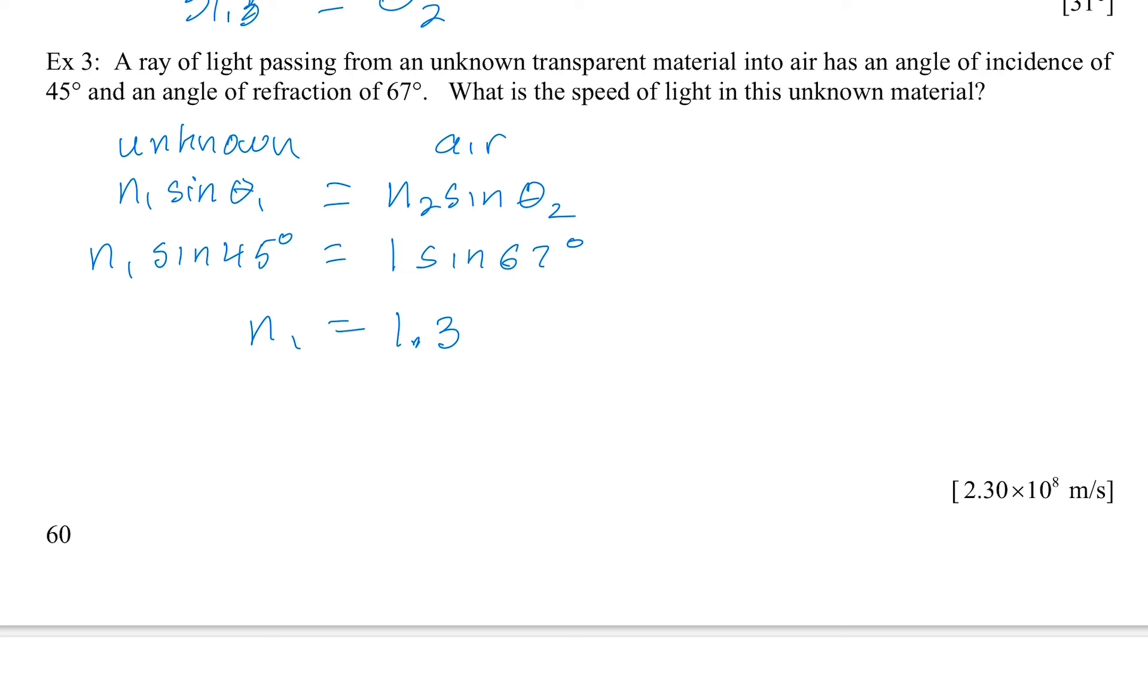I don't know if I've mentioned this clearly yet, but N does not have a unit because N is the ratio of two speeds. It's the speed of light in a vacuum to the speed of light in this material. Both of them are in meters per second. So when you divide meters per second divided by meters per second, you have no units.